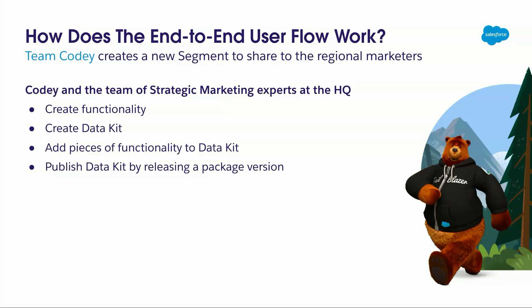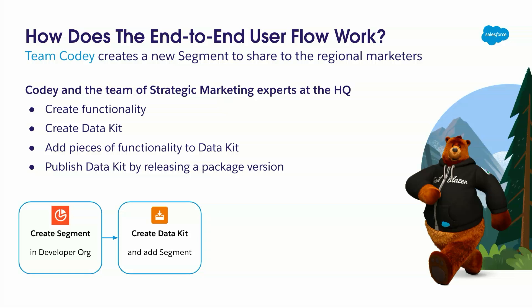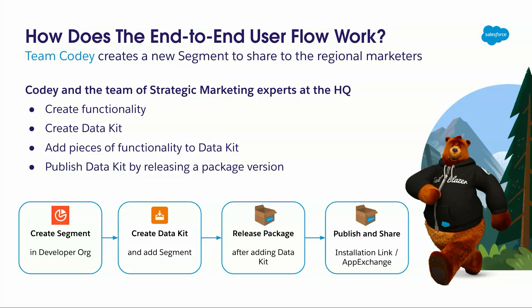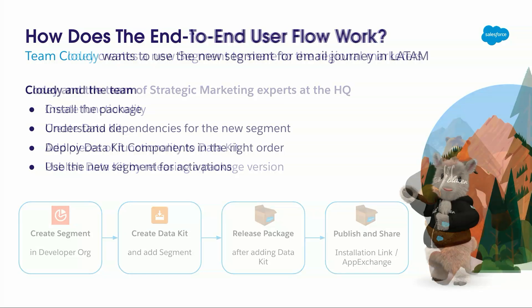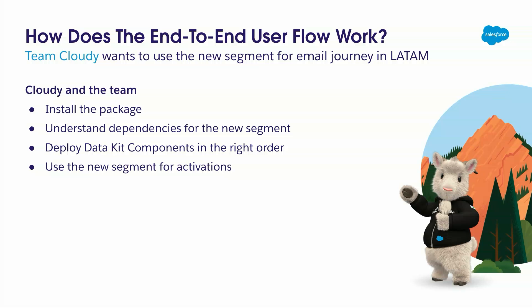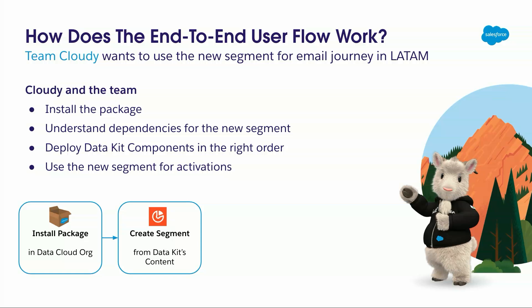How does the end-to-end workflow work? Imagine Team Cody. Team Cody has had a brilliant idea on how to create a new segment and will go create the functionality in their data cloud org. After that they will create a new data kit, give it a name, and add pieces necessary for a segment to function. After that you package the data kit, release it, and then you can install it into an org. Team Cloudy on the other side installs the package and needs to understand the dependencies of those templated components within the data kit and deploy them in the right order. Once done, you can create the segment from the data kit — we have a demo later so you have a clear picture.